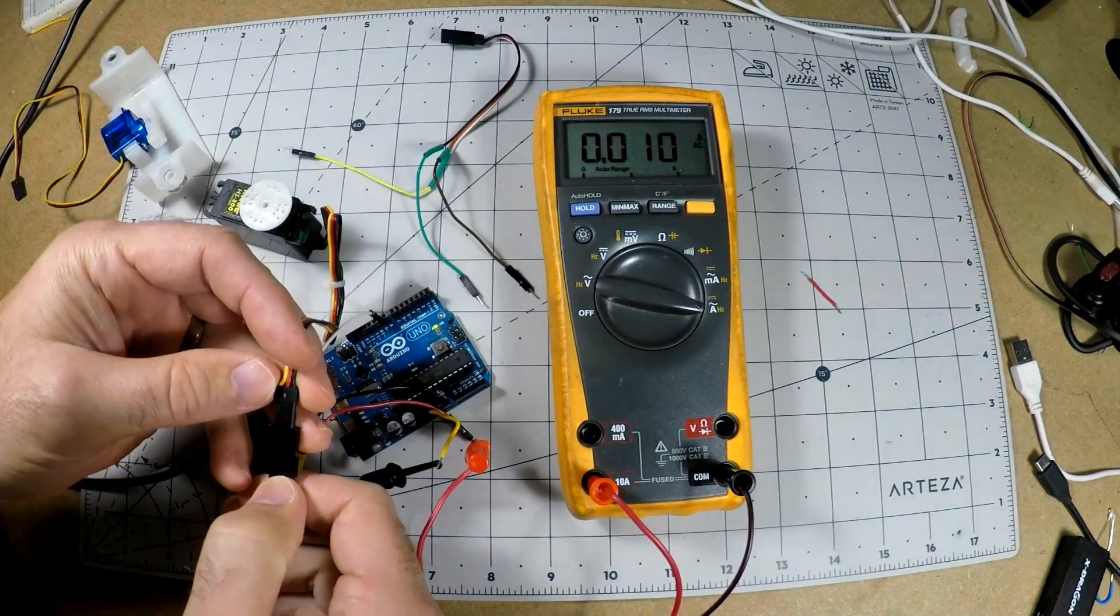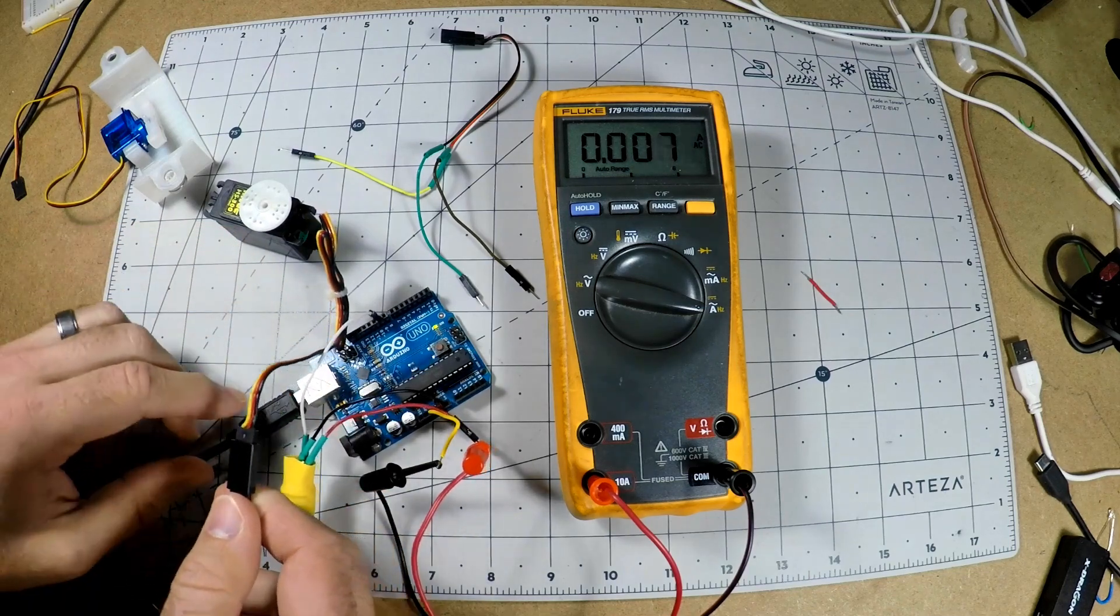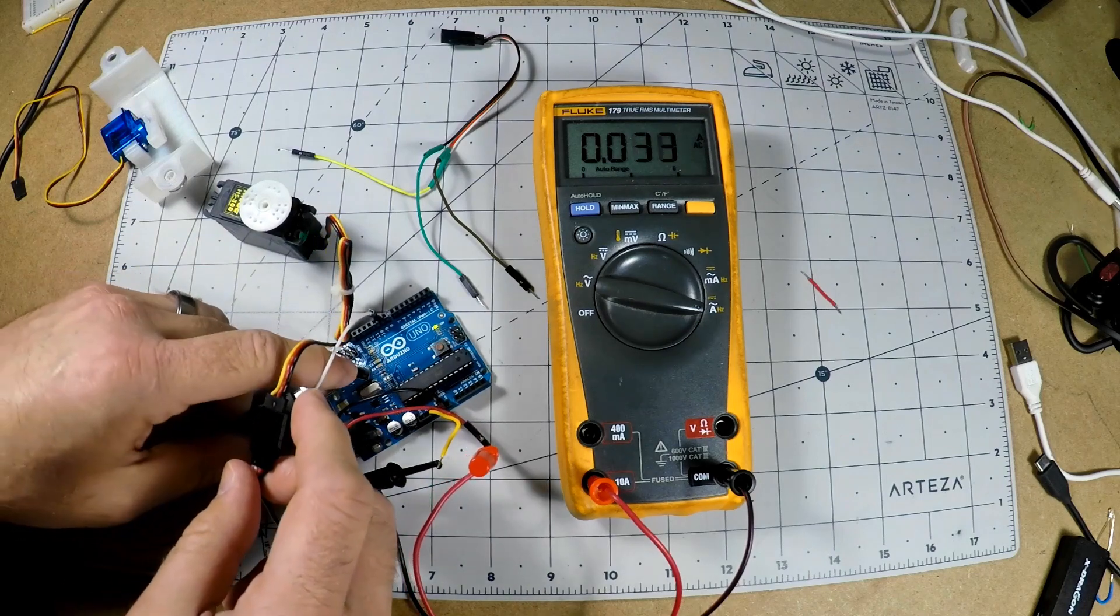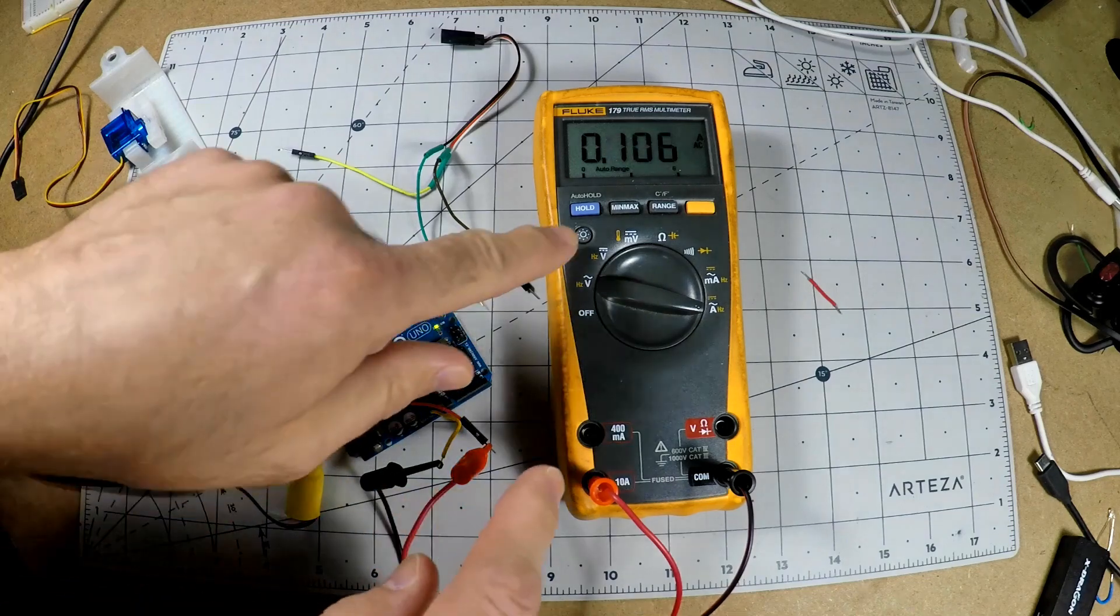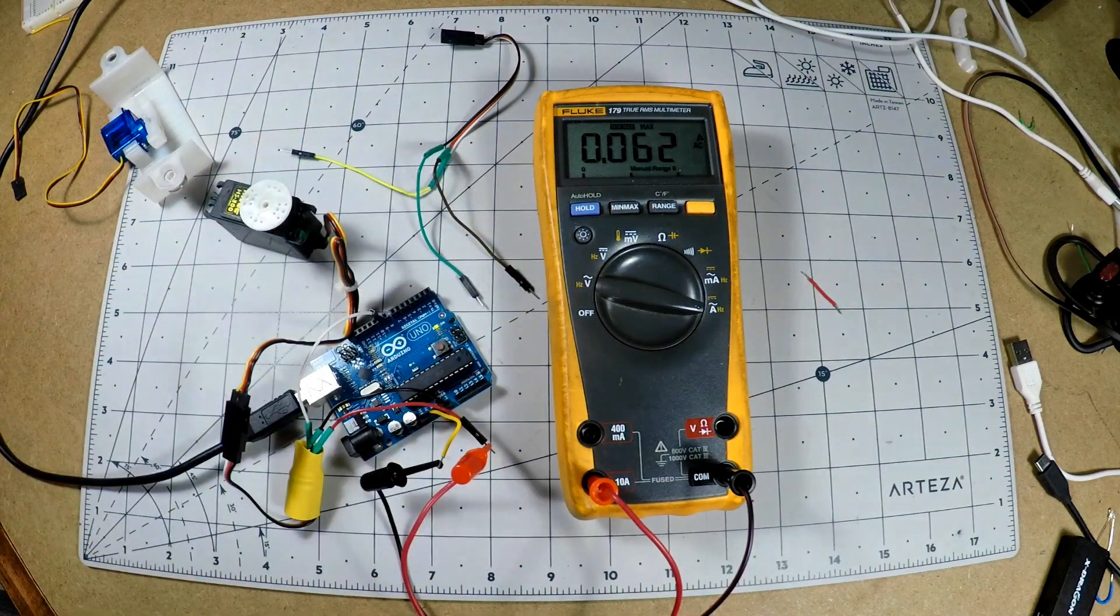So let's take a look at this with the capacitor on there. The current varies, but the maximum I recorded here is about 100 milliamps, so about the same as the microservo without the capacitor on it. Note here that I'm using a 2200 microfarad capacitor, and this is obviously going to vary a lot depending on multiple factors.